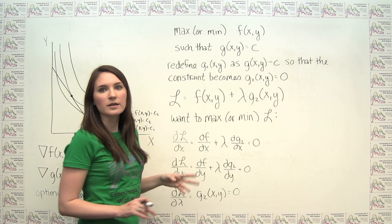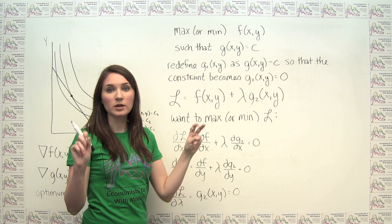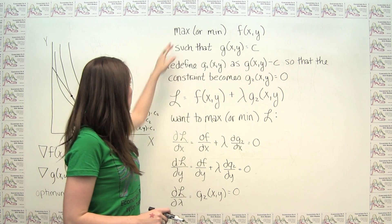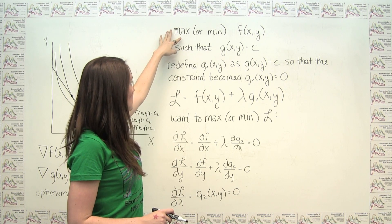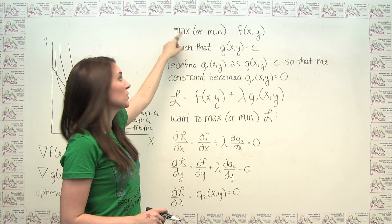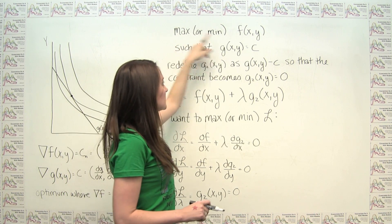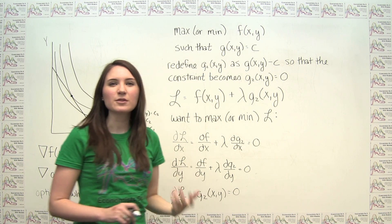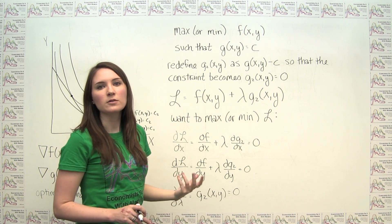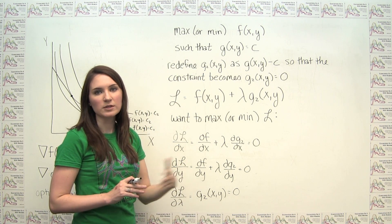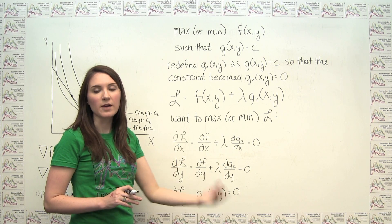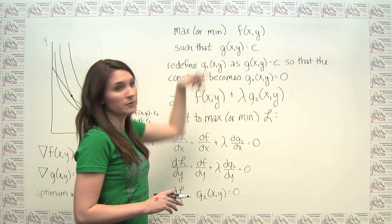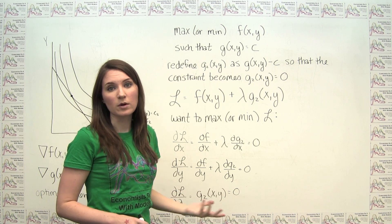Once you've done that, you'll get a set of critical points. Because the process is the same regardless of whether you're maximizing or minimizing, you need to go through all critical points and determine which ones are in fact the ones you're looking for, depending on whether you're seeking a maximum or a minimum.